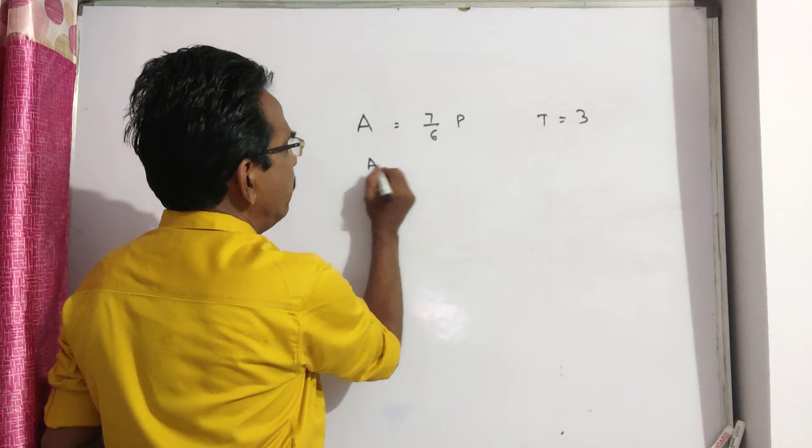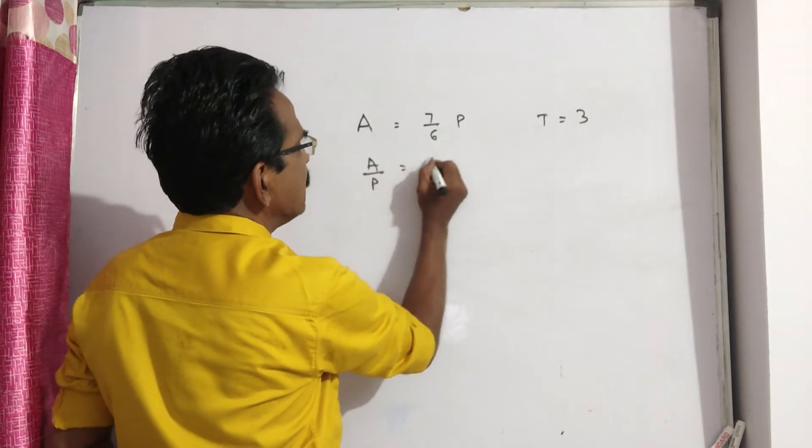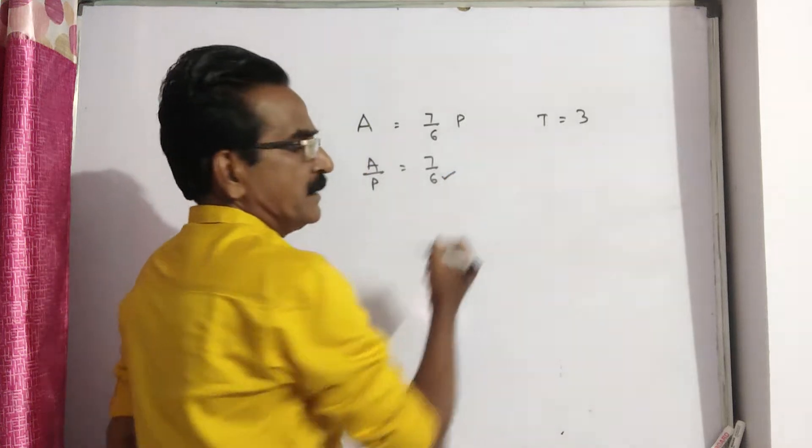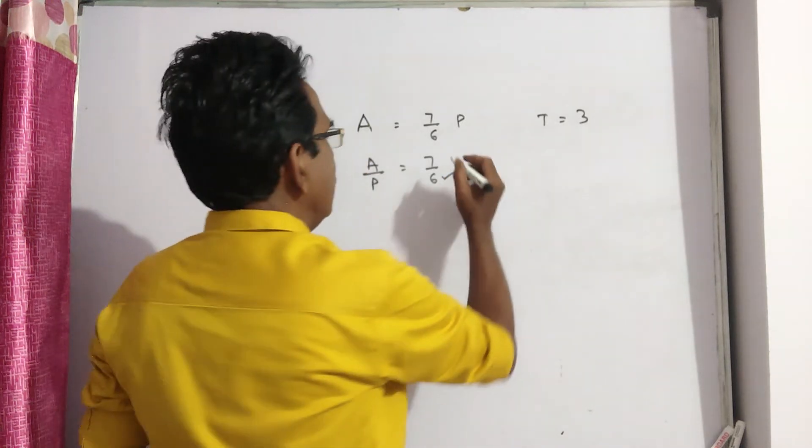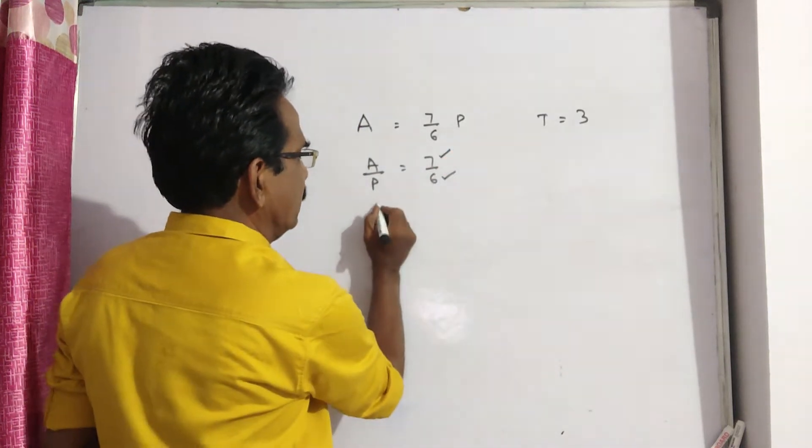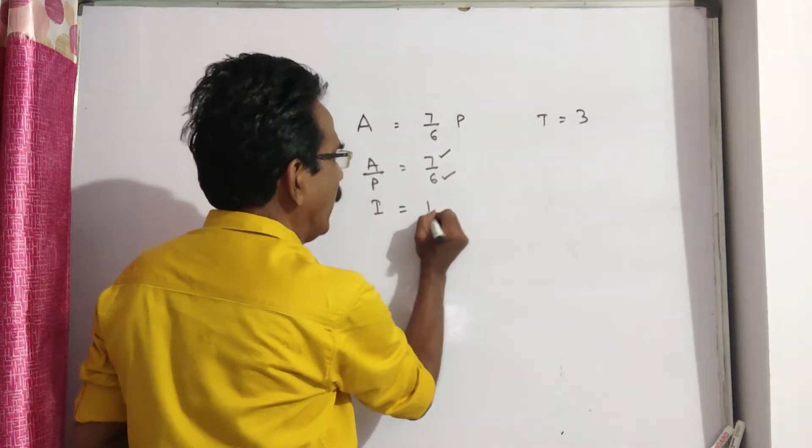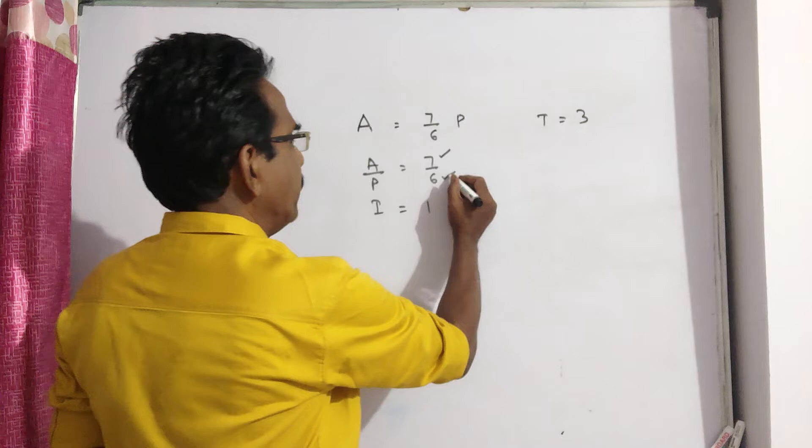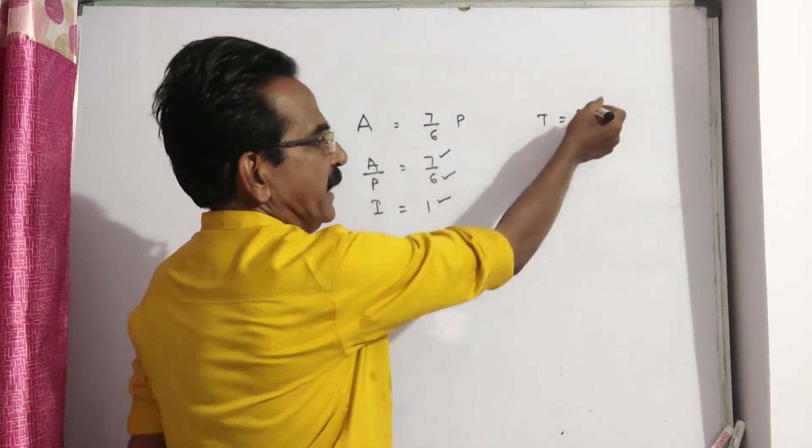Now, A by P, A by P is equal to 7 by 6. That means 6 rupees is the principle, amount is 7 rupees, that means I is equal to 1, 7 minus 6, I is equal to 1. P is known, I is known, T is known.